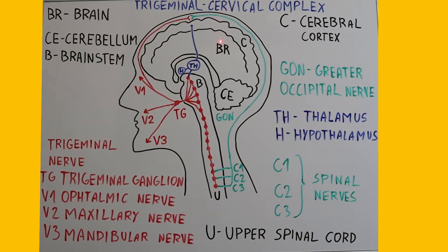Let's start with a quick legend for the diagram. BR stands for brain, CE for cerebellum, B for brainstem, C for cerebral cortex, and TJ for the trigeminal ganglion. The greater occipital nerve and the spinal nerves C1, C2 and C3 are shown in green. The thalamus and hypothalamus are shown in blue, and all the structures of the trigeminal nerve are highlighted in red.